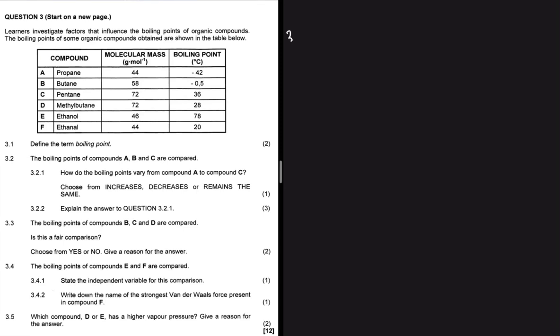Question 3.1 says define the term boiling point. So we know fully well that the boiling point is the temperature at which the vapor pressure is equal to the atmospheric pressure. So the temperature in which the vapor pressure is equal to the atmospheric pressure. But you have to write it in full. I'm just writing it like this for the sake of time.